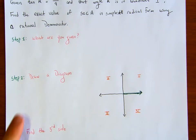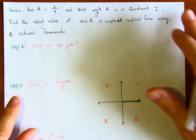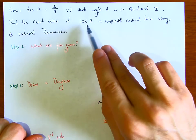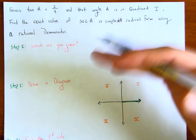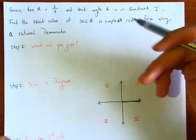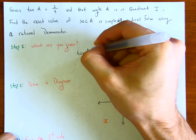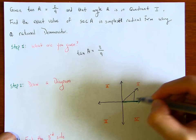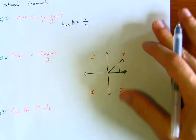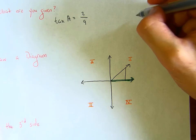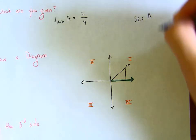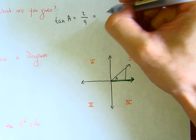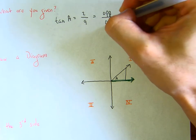Let's try another one together. This question says: given that tangent of a is 2 over 9 and that angle a is in quadrant 1, find the exact value of secant of a in simplest radical form. If you want, copy the question and try it yourself. We know tangent of a is 2 over 9 and it's in the first quadrant. Let's draw an angle and make a little triangle, and let me zoom in.